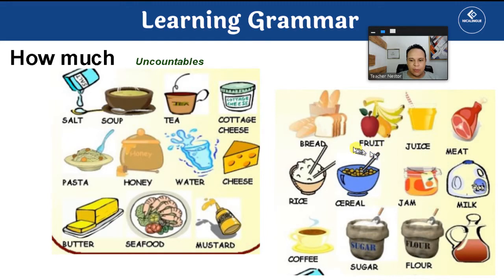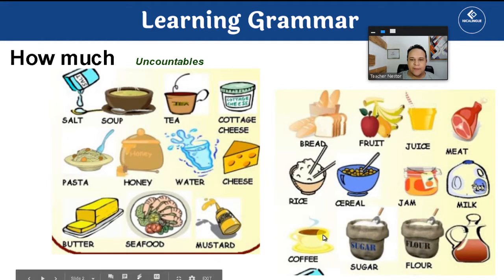We also have more uncountable nouns. For example: bread, fruit, juice, meat, rice, cereal, jam, milk, coffee, sugar, flour, and wine.